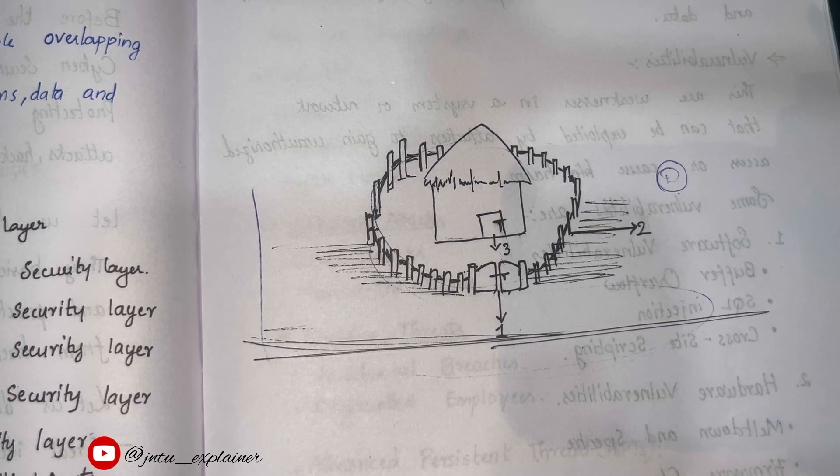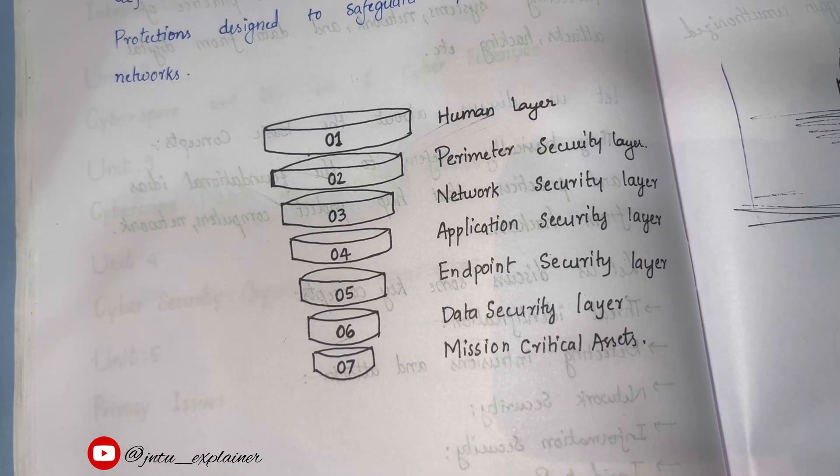Let's understand what are the layers in it. Human layer. The human layer is often regarded as the most vulnerable layer. It mainly focuses on the human element within an organization. For example, it includes security awareness training, strong password policies, and multi-factor authentication.